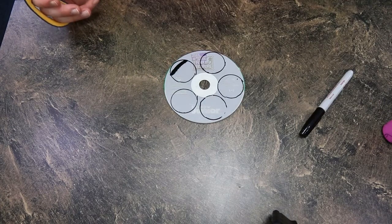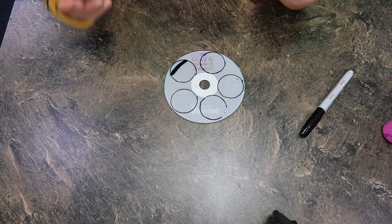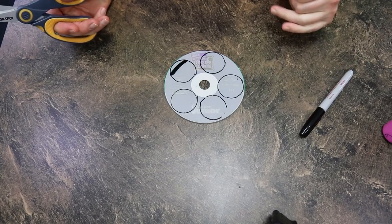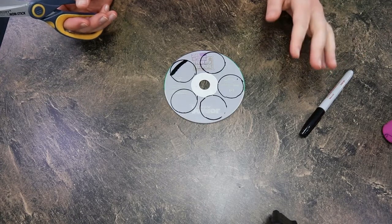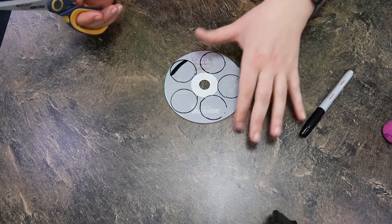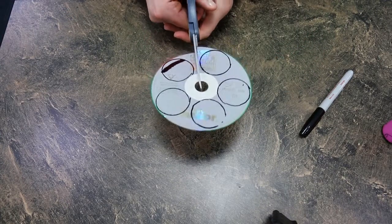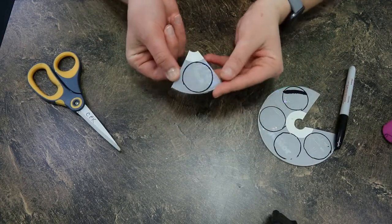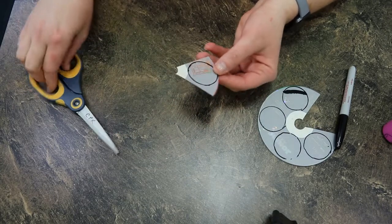So now that we have all of our circles drawn onto our disc we are ready to start cutting. Now cutting CDs and DVDs is not easy so please remember to be careful, to take your time and make sure that you are being safe. Cutting out the circle into a triangle like this just makes it easier for me to be able to cut out the circle.